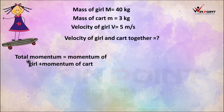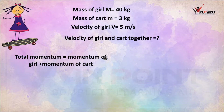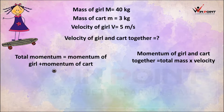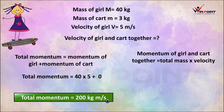Total momentum before interaction equals momentum of girl plus momentum of cart. Momentum is the product of mass and velocity. Momentum of girl = 40 × 5. Momentum of cart = mass of cart × velocity of cart. Before interaction, the cart is at rest, so its velocity is zero. Total momentum = 40 × 5 + 0 = 200 kg·m/s.